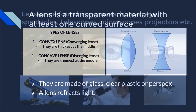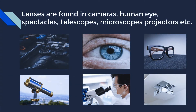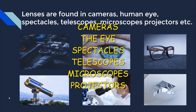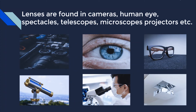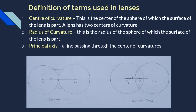Lenses are found in different places. They're found in cameras, the human eye, spectacles, telescopes, microscopes, and projectors. These are just some of the basic gadgets which use lenses.